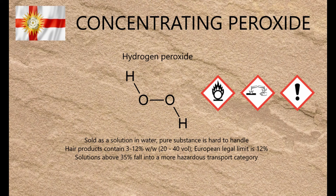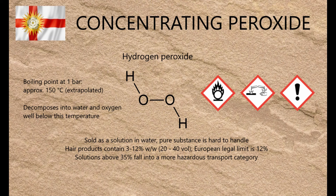The most typical way of concentrating a dilute solution of a substance in water is to boil off the water by heating it. In this case that's not a practical option because hydrogen peroxide decomposes into water and oxygen at high temperatures, and the rate of decomposition increases as it gets hotter, so if you hold the solution at its boiling point for long enough what you end up with is mostly water.